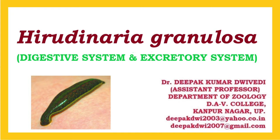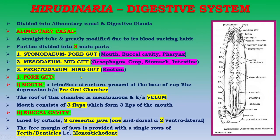Hello friends, today you are going to learn the digestive system and excretory system of the Indian cattle leech, that is Hirudinaria granulosa. The digestive system of Hirudinaria is very characteristic and it is divided into the alimentary canal and digestive glands.